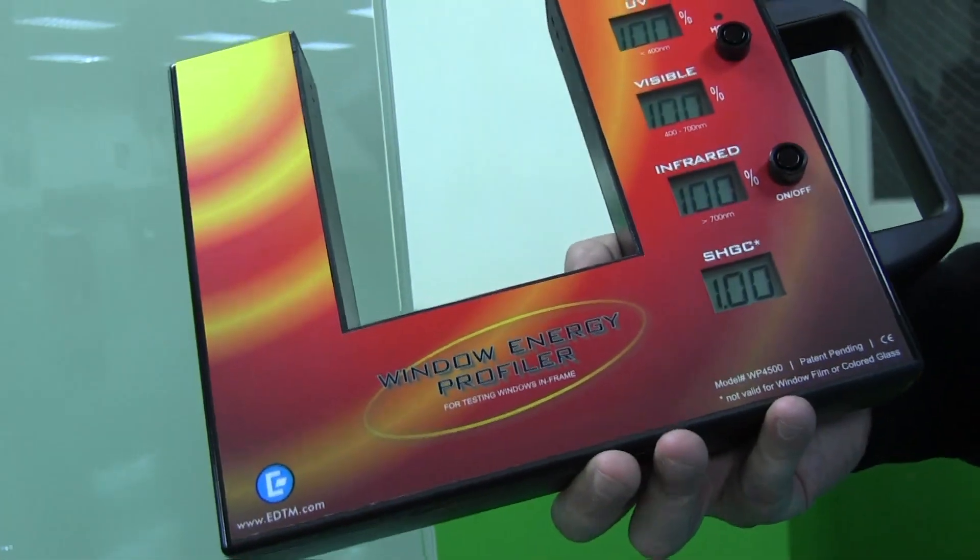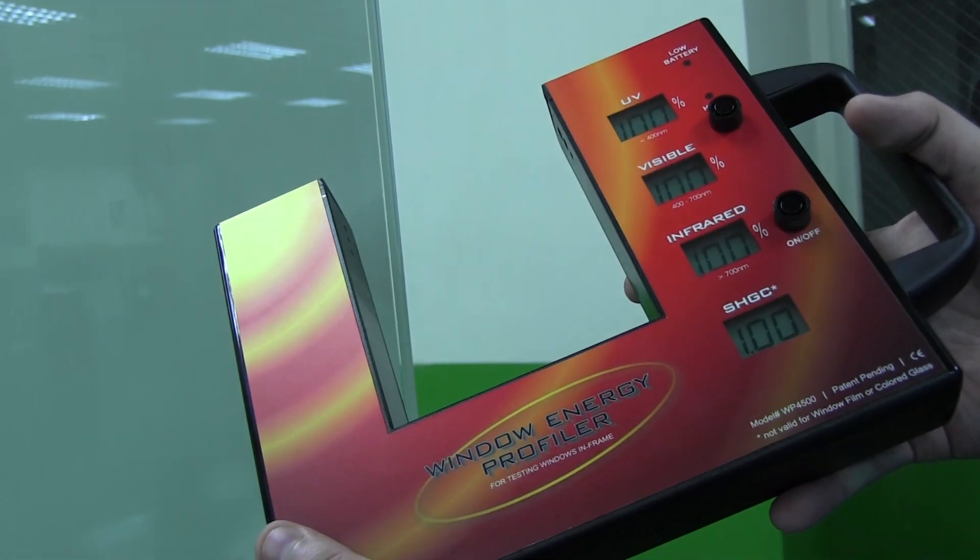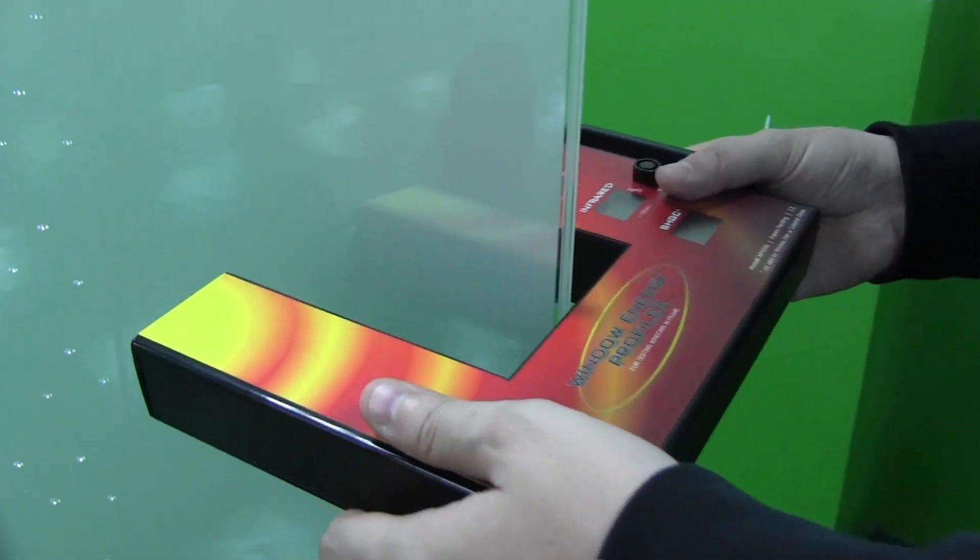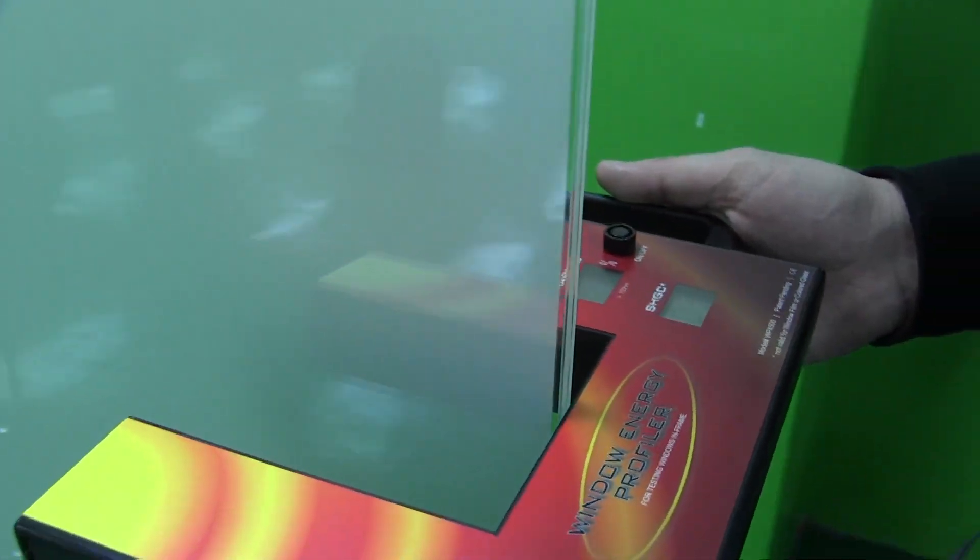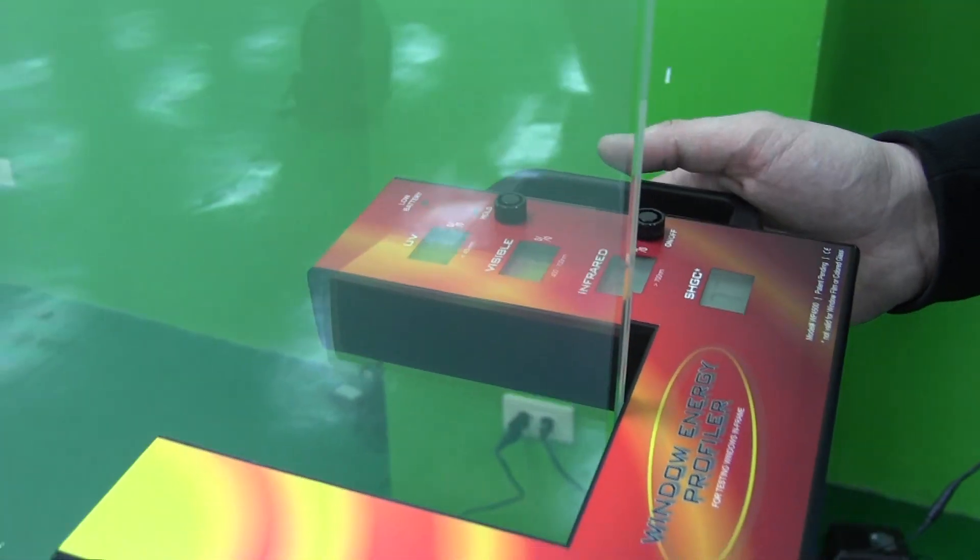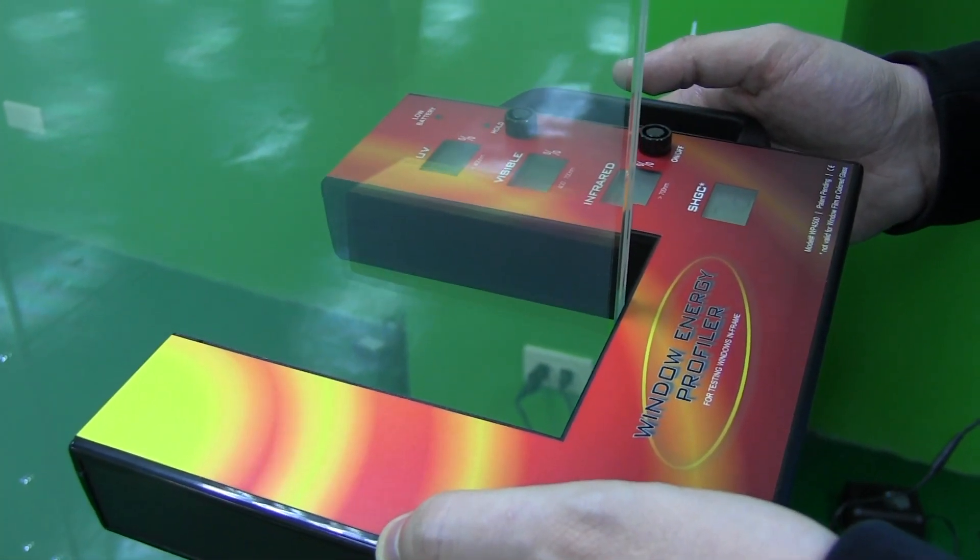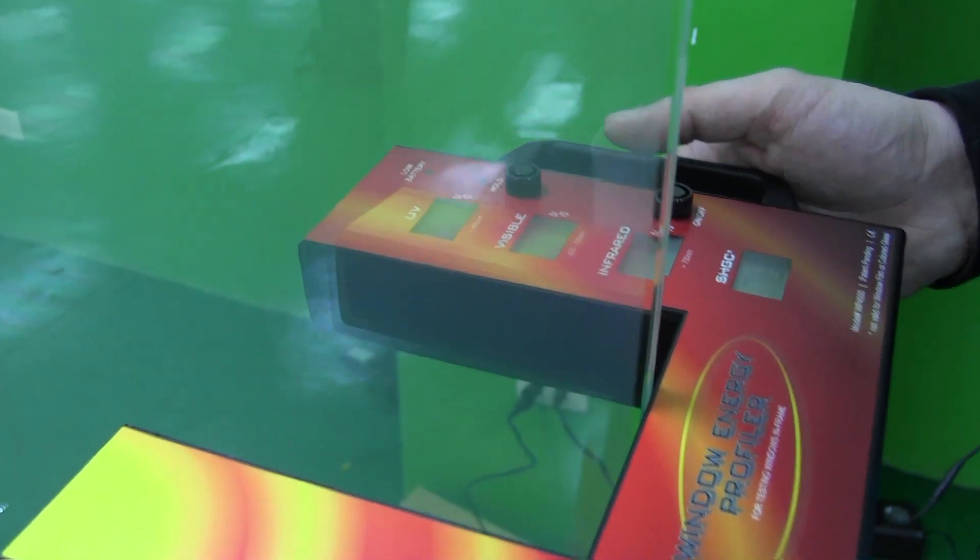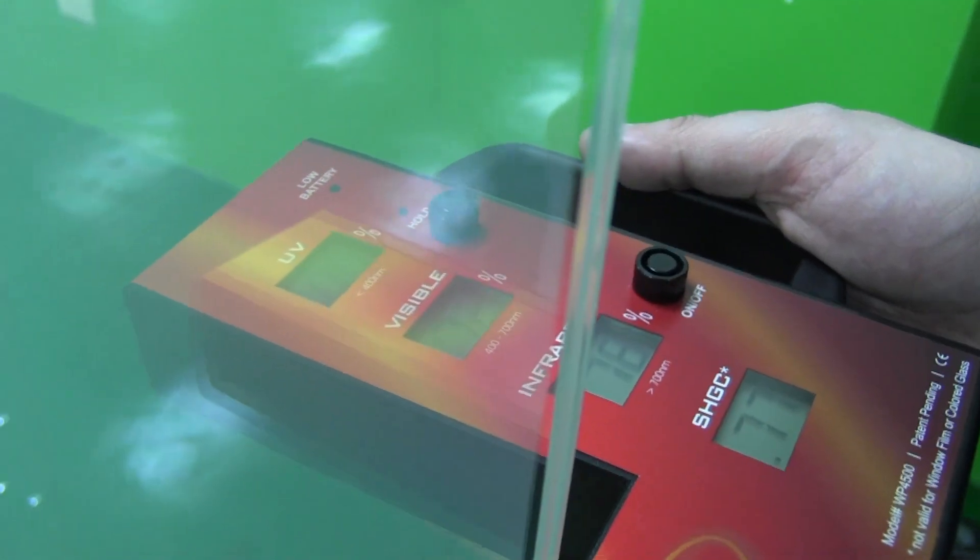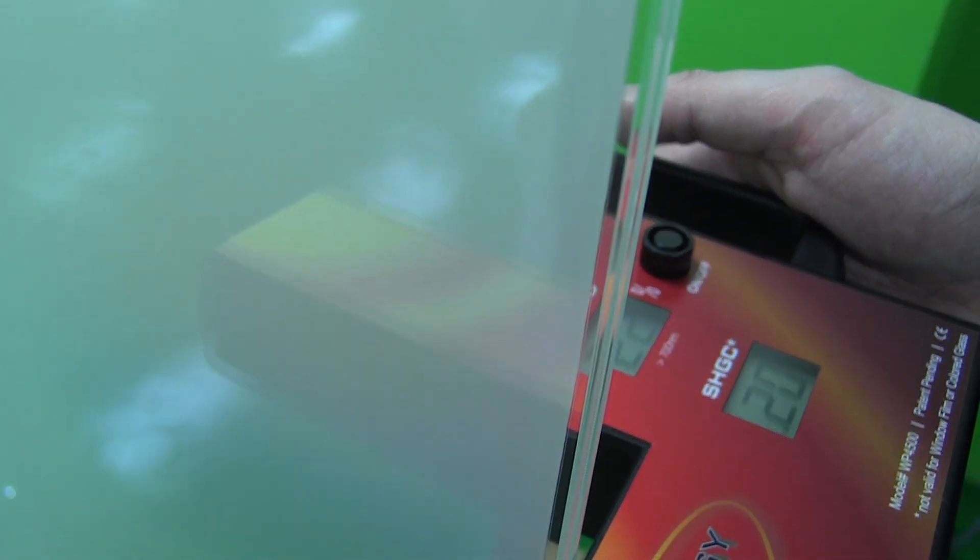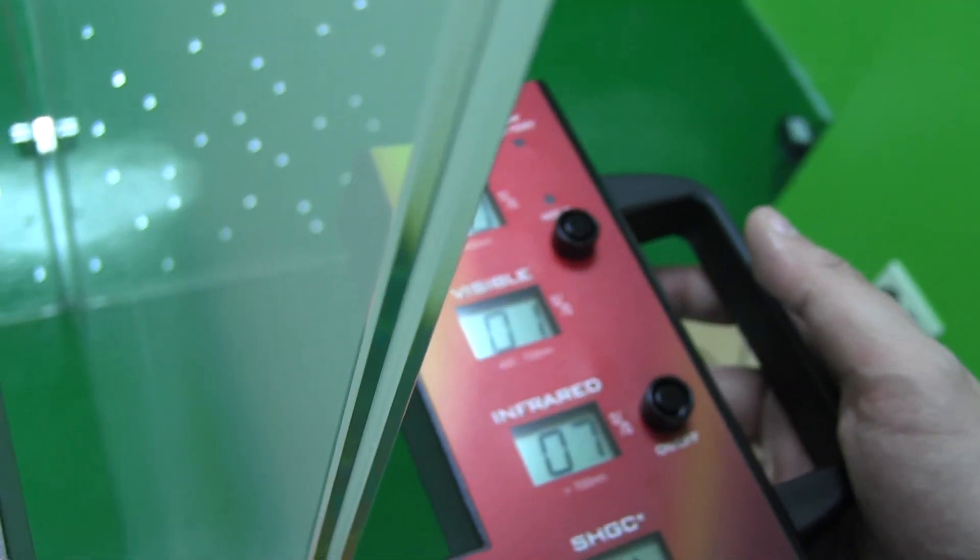This is called the window energy profiler and they're going to use this to see how the visibility looks. Right now we got up to 71% again because we just switched it on, and when we're switching it off we're going to be down to 1% again.